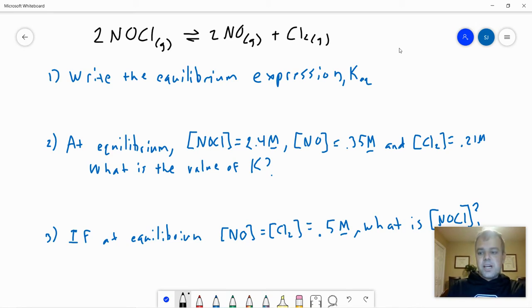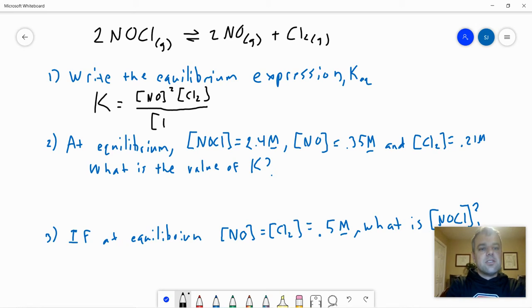I apologize for my handwriting on the screen. It asks us to write the equilibrium expression KEQ. KEQ or KC or KP or KA or KB or KW or KSP - there's lots of different values of K. They're all written the same way, except for KP, which is partial pressures. So for K, it equals the concentration of our products NO squared times Cl2, just to the first power because its coefficient is 1, divided by the concentration of NOCl squared.